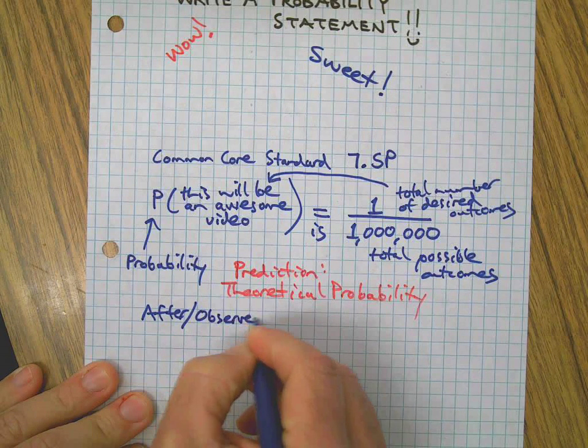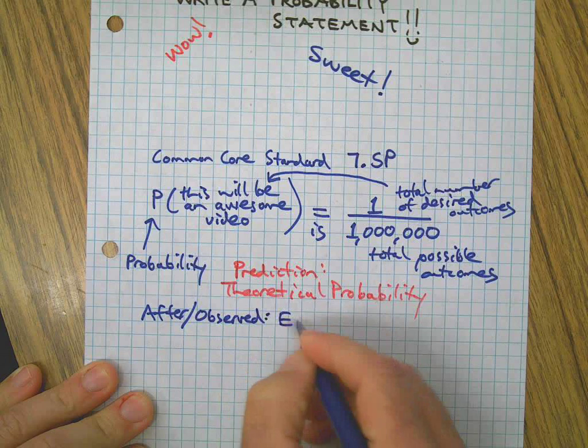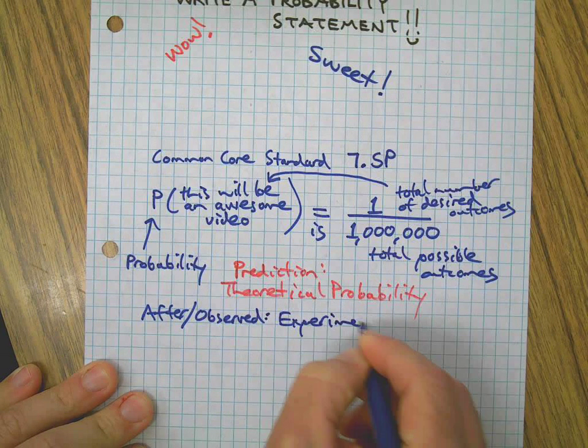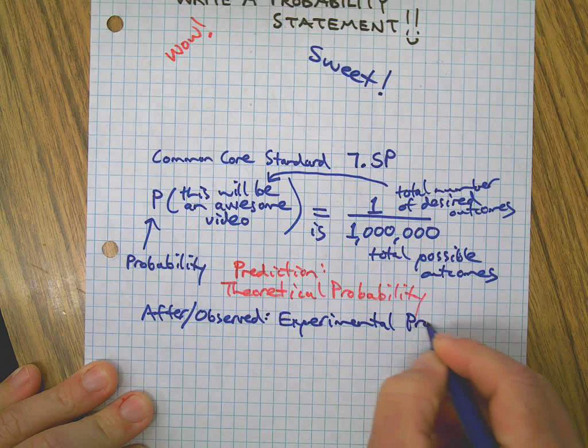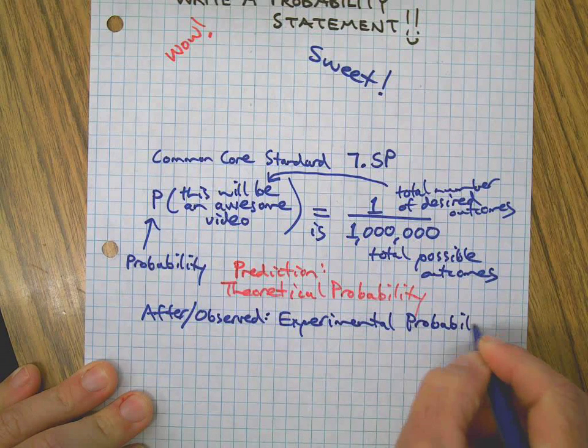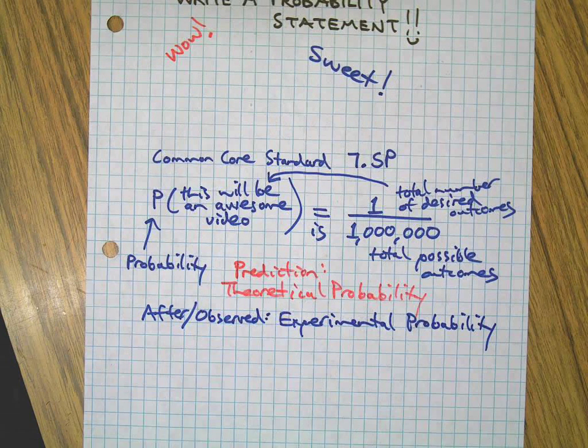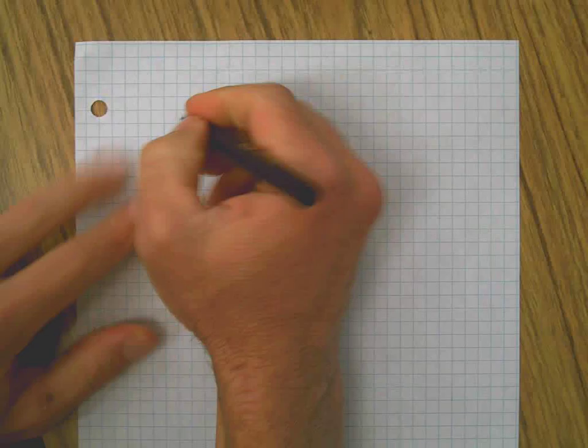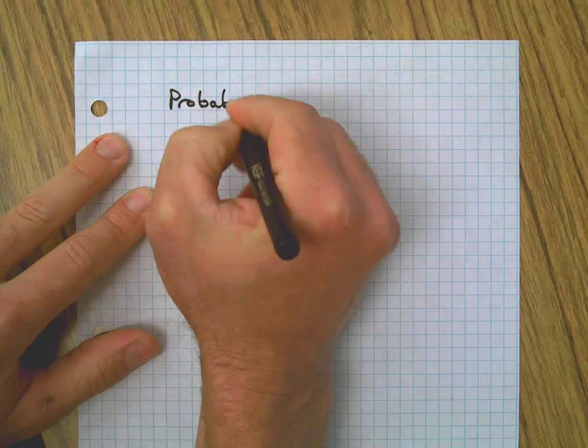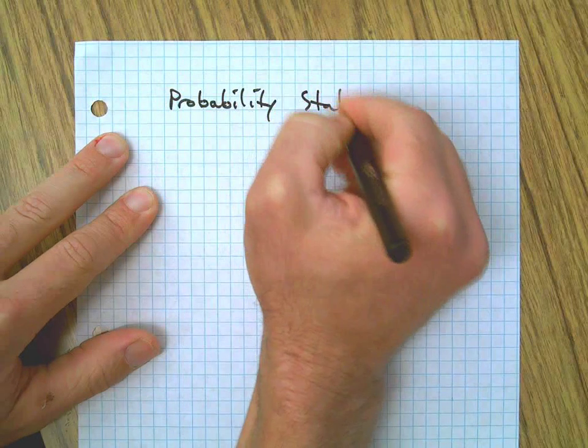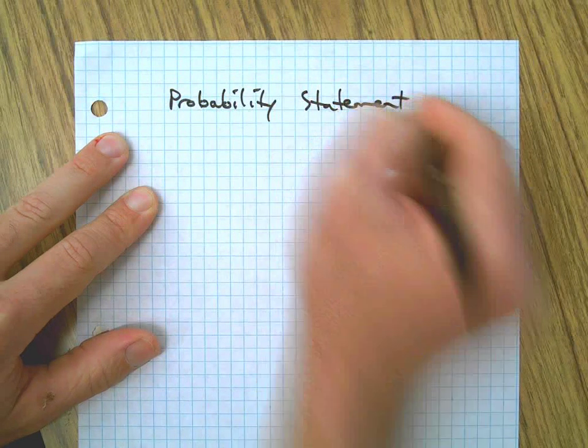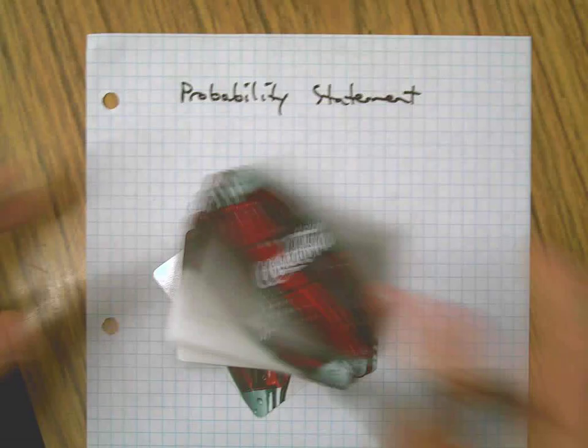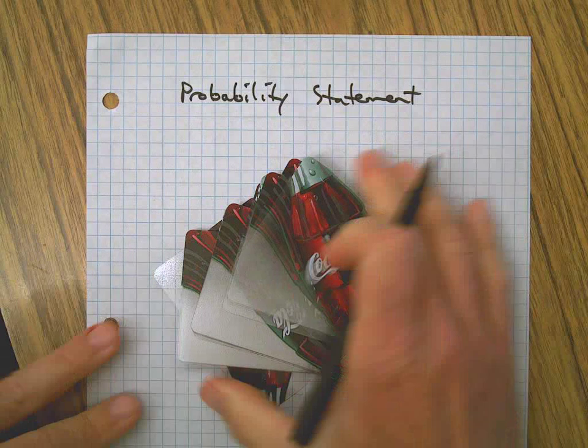The observed outcome is experimental. Okay, but that's a separate issue. One thing that's fun to do in writing probability statements is to use a deck of cards. Just in case you didn't know this, in a standard deck of cards like this one, there are 52 cards.